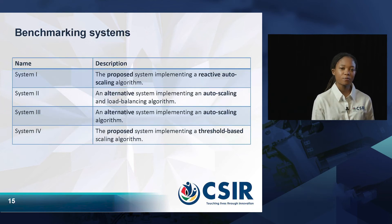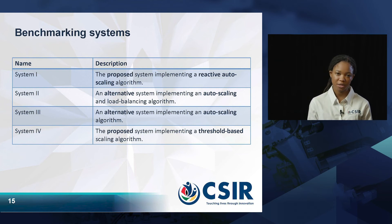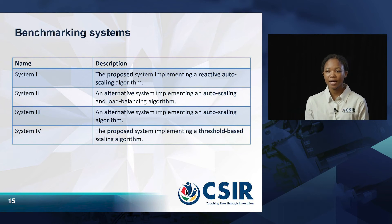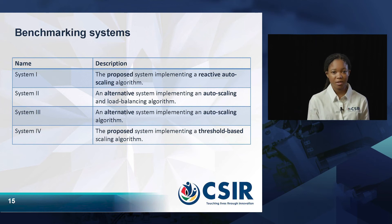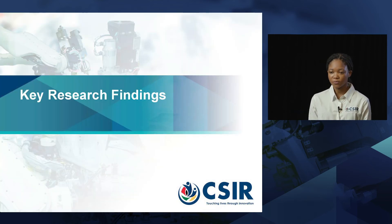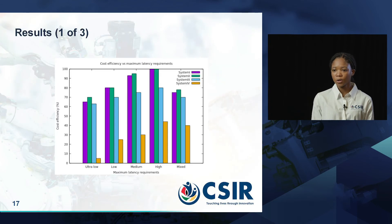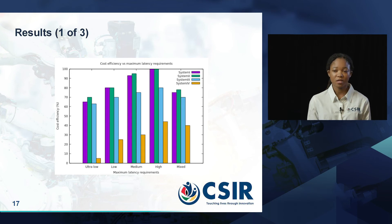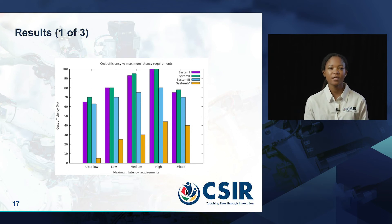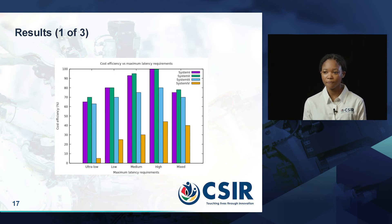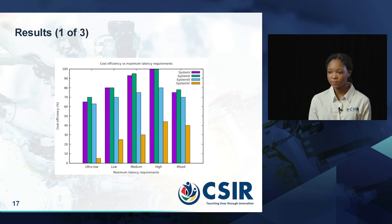As part of the performance evaluations, we compared the proposed system — which implements a reactive auto-scaling algorithm — against two alternative systems that used auto-scaling algorithms and one system that used a threshold-based scaling algorithm. For the first experiment, we looked at the effects of latency requirements on cost efficiency, where cost efficiency was a measure of the percentage of users that received their services within the specified service latency requirement. We had five classifications of maximum tolerable latency.